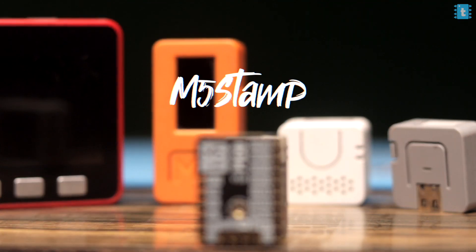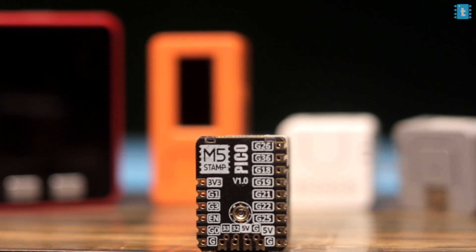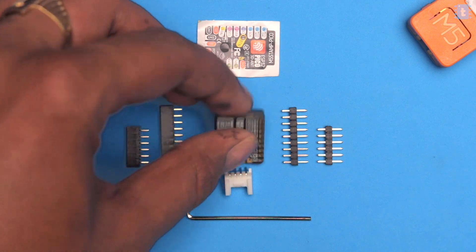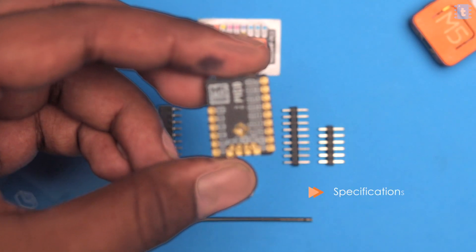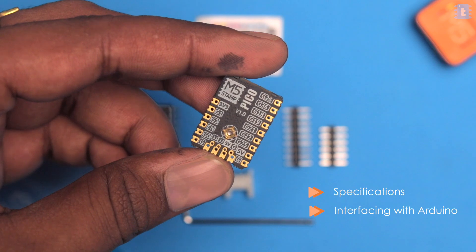M5 Stamp is now the smallest ESP32 based board after M5 Atom series. In this video I'll let you know everything about this product, including its specifications and how to use it with Arduino IDE. In the end we'll be making a very interesting project using this M5 Stamp, so stick around.